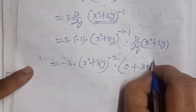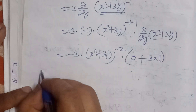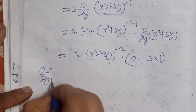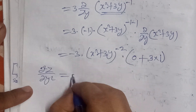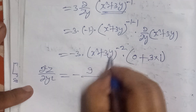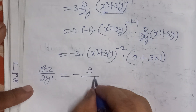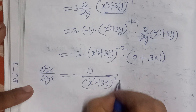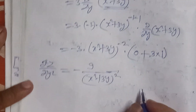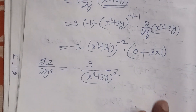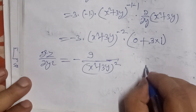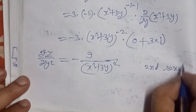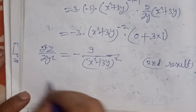Since x is constant in partial differentiation with respect to y, differentiation of x² is 0, and differentiation of 3y with respect to y is 1. Multiplying: 3 × (−3) = −9, so del²z/del y² = −9/(x² + 3y)². This is our second result.